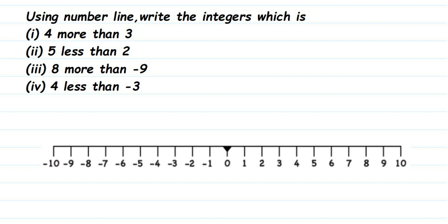Hello everyone. Here's a question from integers: using a number line, write the integers. We have four questions. The first one is four more than three. Whenever we have 'more,' it means we have to add, so we go towards the right side of the number line. When we have 'less,' as in the second question, it means we move to the left side of the number line.